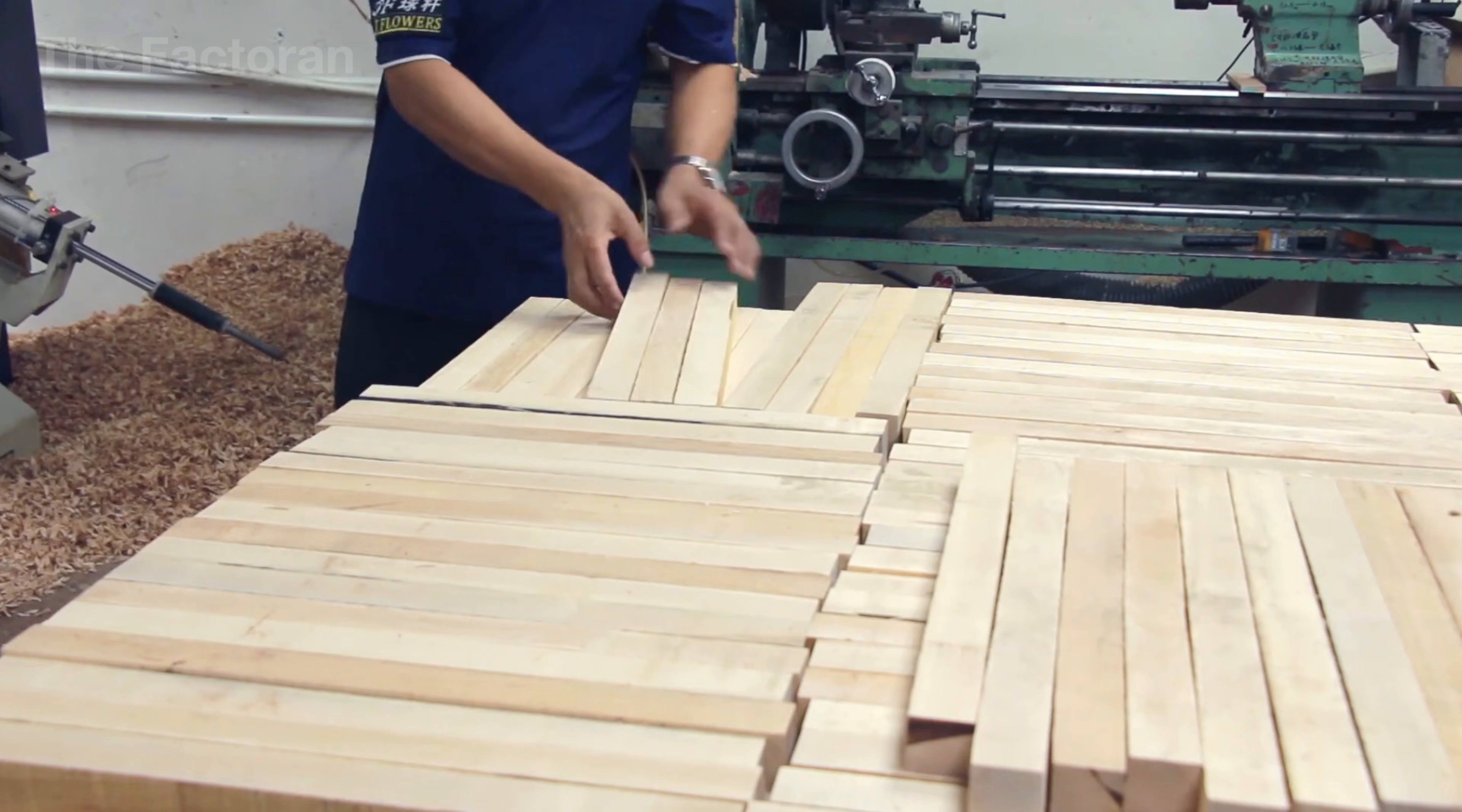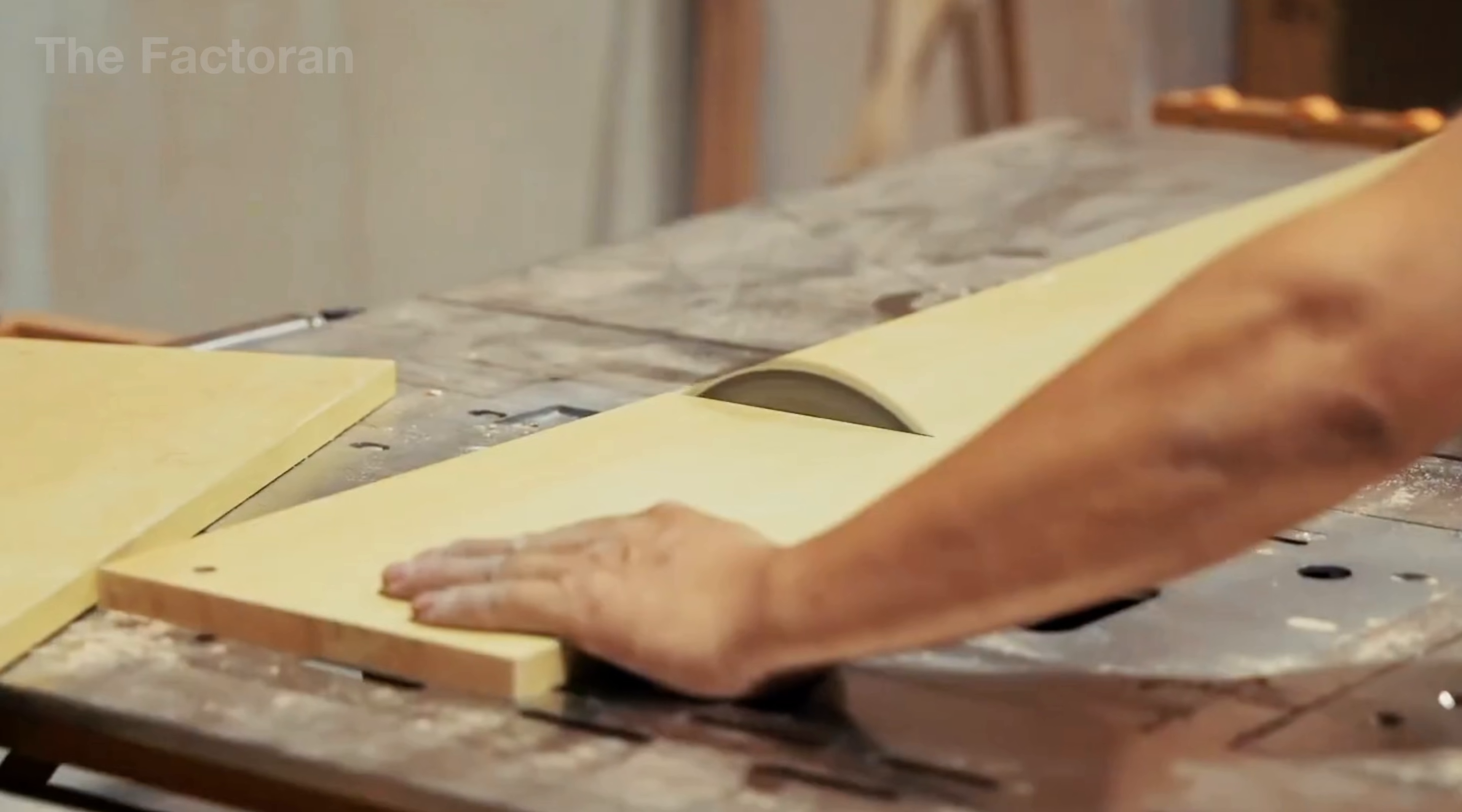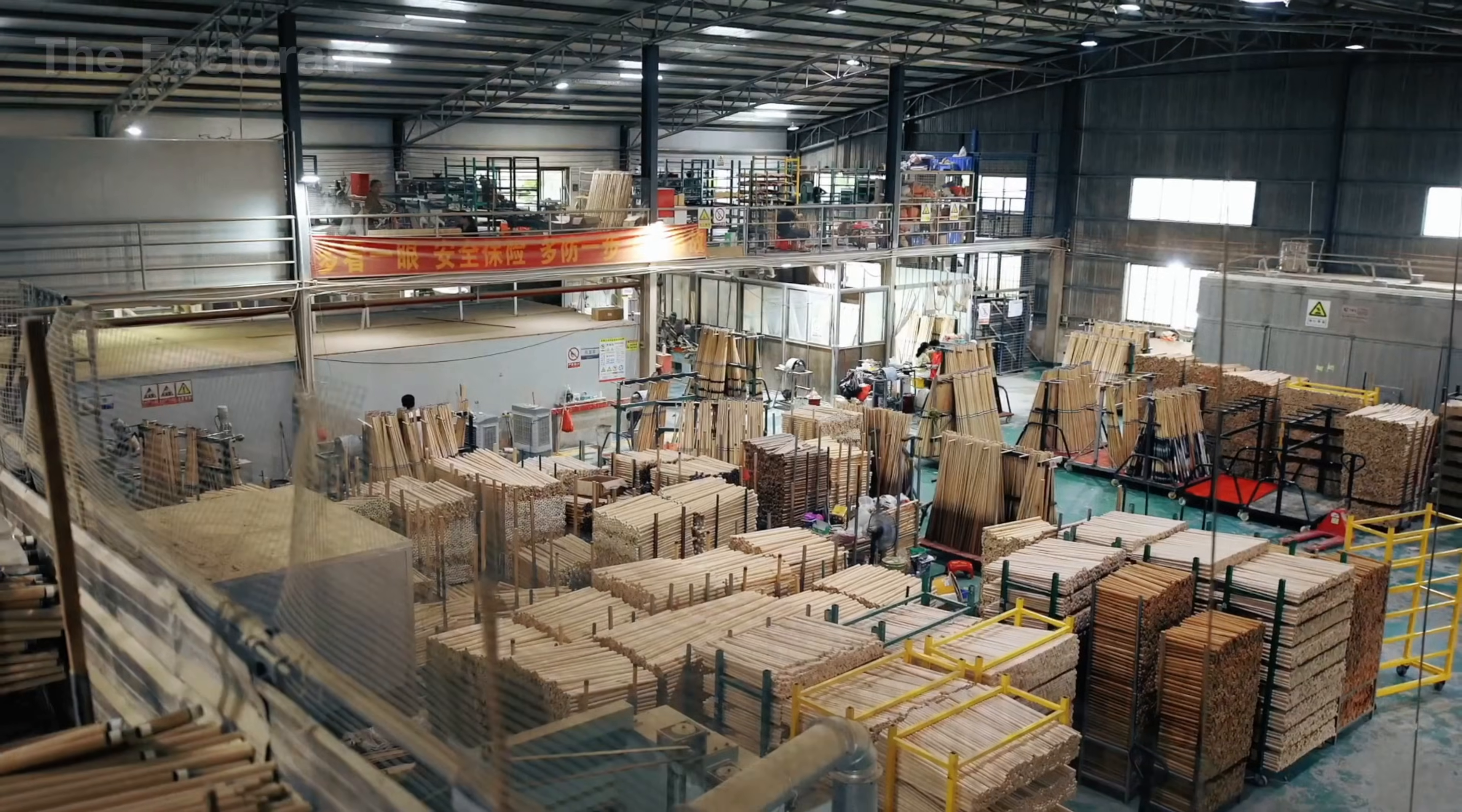Once the appropriate wood has been selected, workers feed it into cutting machines, where it is precisely cut into sections of standardized thickness, preparing each piece for the next stages of shaping and refinement.